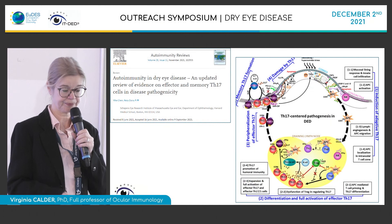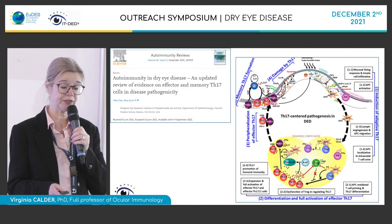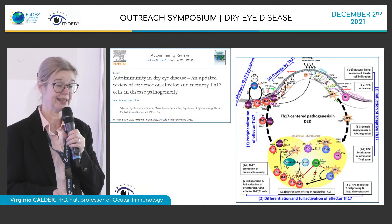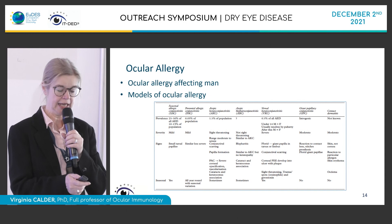There's a recent 2021 review written around the role of TH17 cells at the different stages of disease. Moving on now to ocular allergy — another form of ocular surface inflammation. There are a whole range of different clinical classifications of ocular allergy.